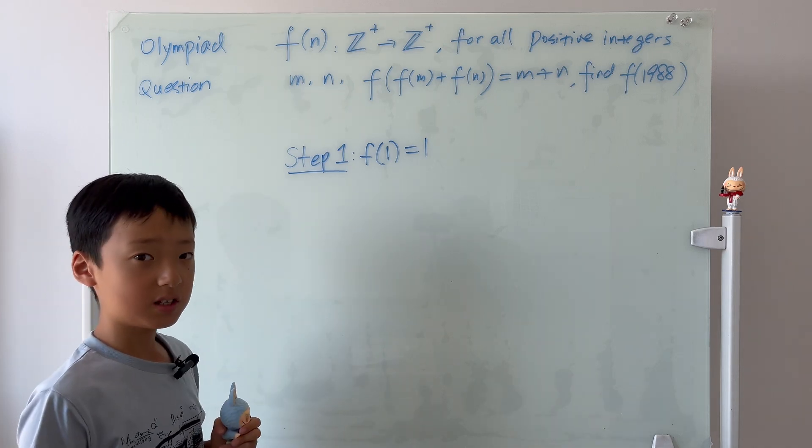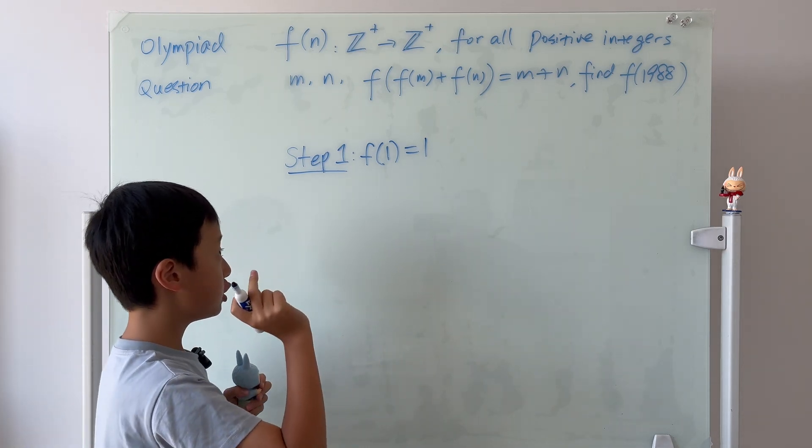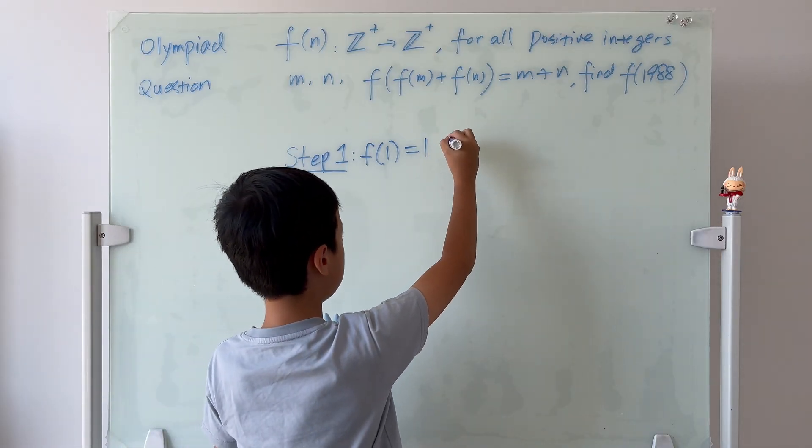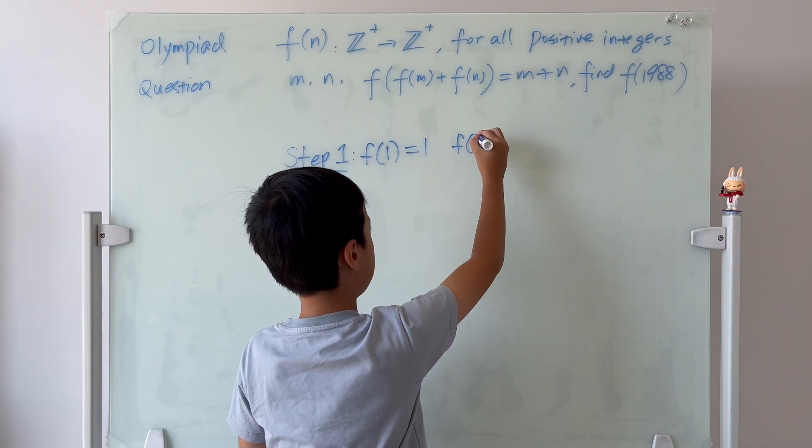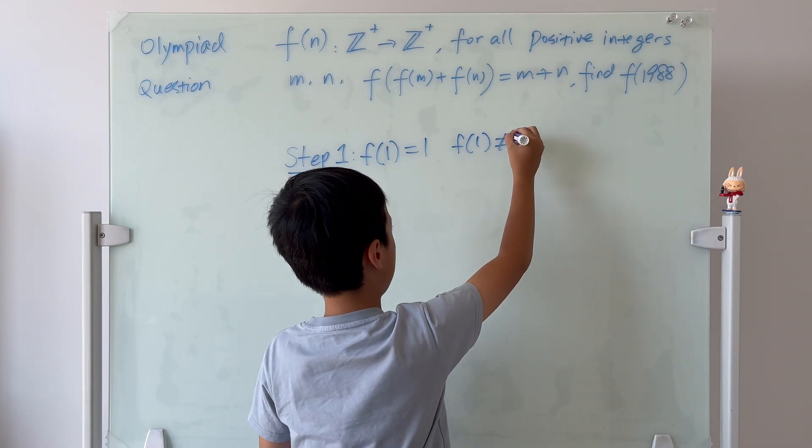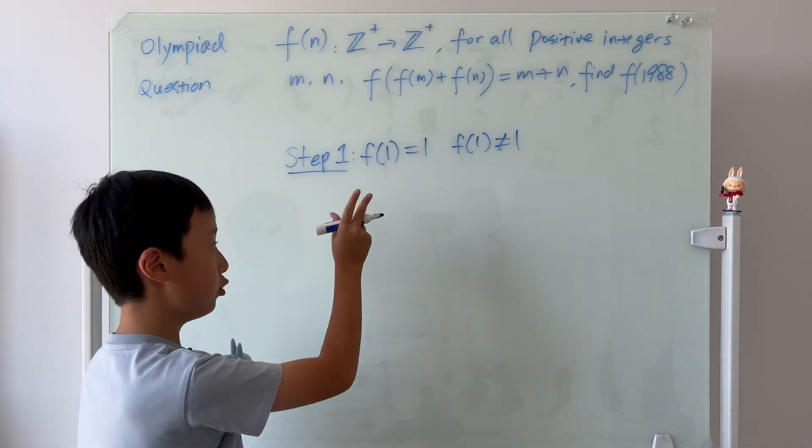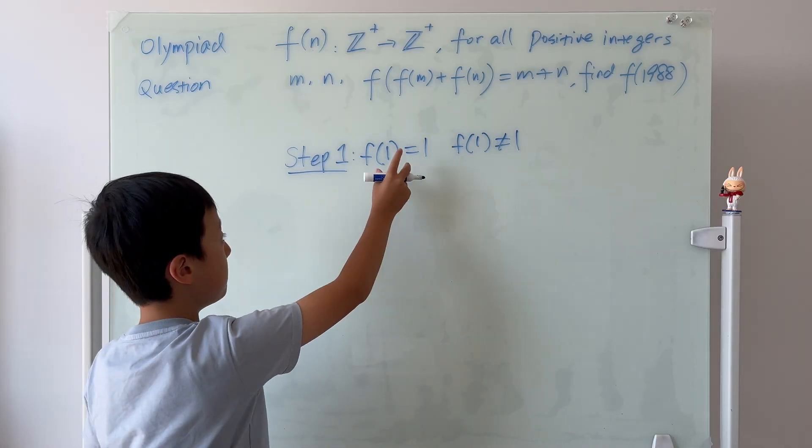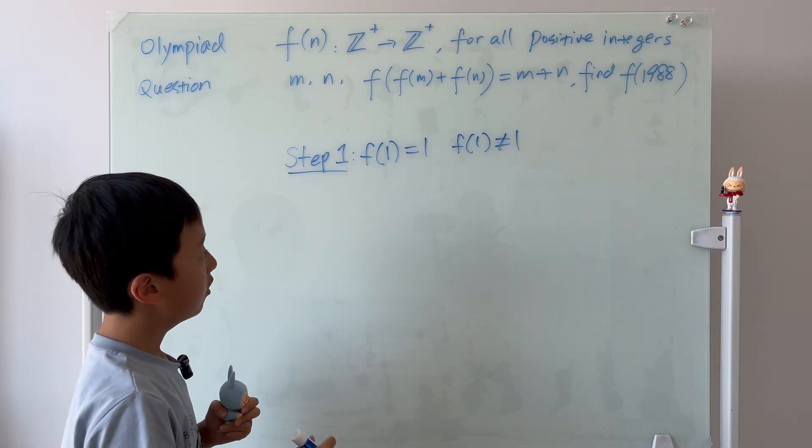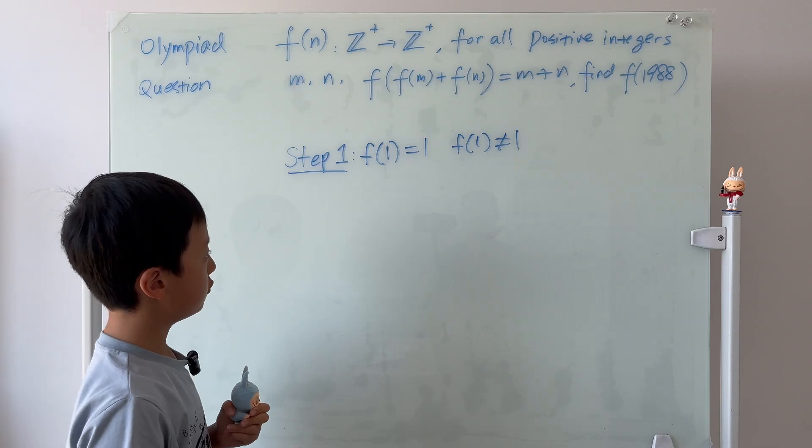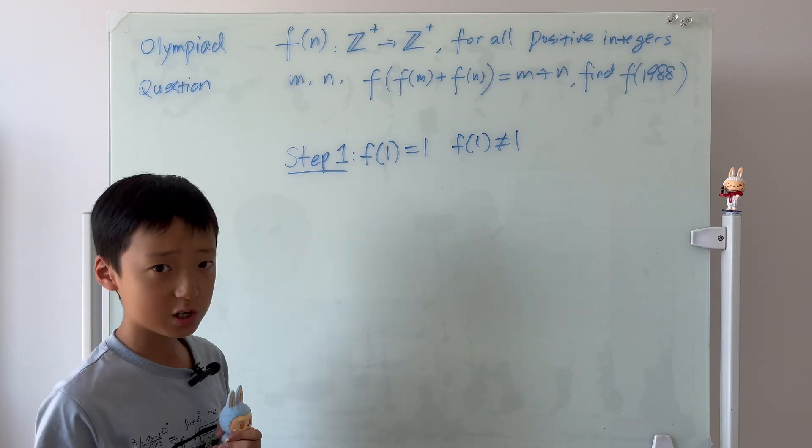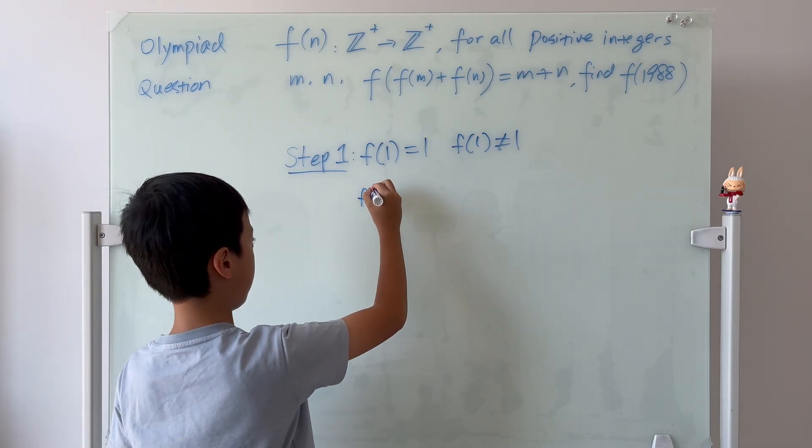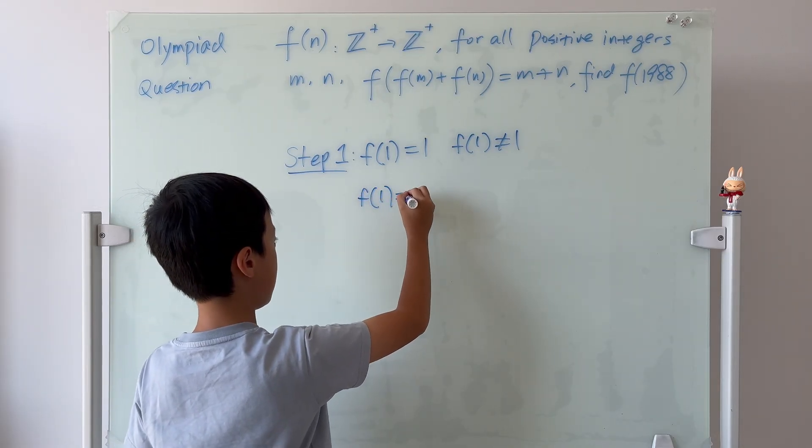So, contradiction means you assume the opposite of this is true. We assume that f of 1 is not equal to 1. And when we're trying to prove this, one of the steps in here will contradict to this idea, meaning that this is true. So, if f of 1 is not equal to 1, then why don't we just make it a random number x?